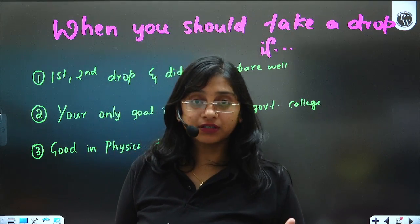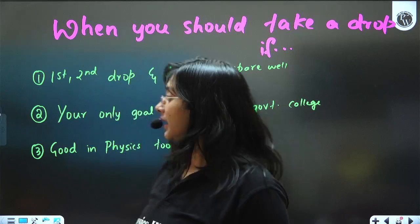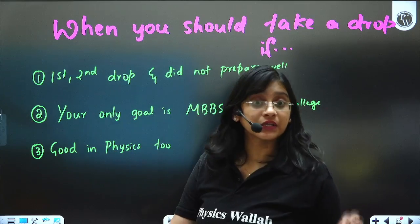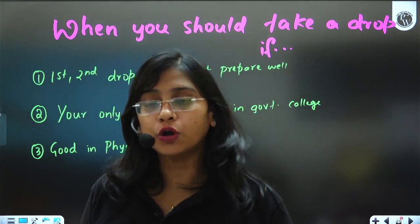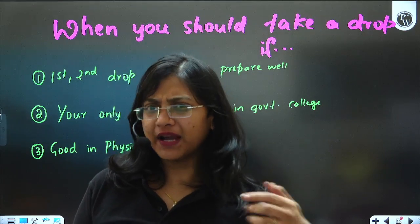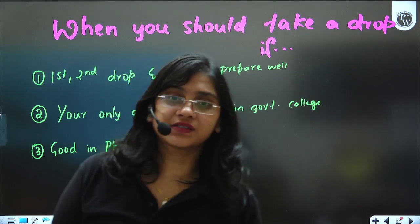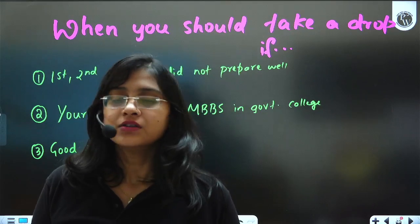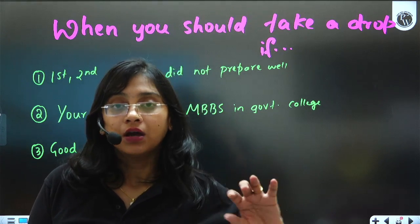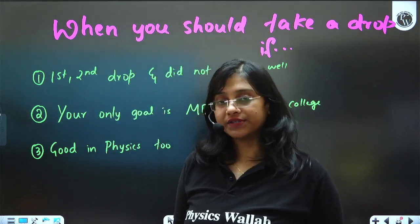Like, if you are the one who is, if it is your third drop, then please don't take, take up the drop again. And if your only goal is MBBS in government college, then you have to take a drop, because you should be scoring around 600, 650. This year, 550 would be, I am not very sure about the cutoff, but some say even 550 is enough to get MBBS seat in government college. I am not sure about it, however. So the actual score that you are supposed to get is 600, 650. So that should be your NEET score to get MBBS in government medical colleges.